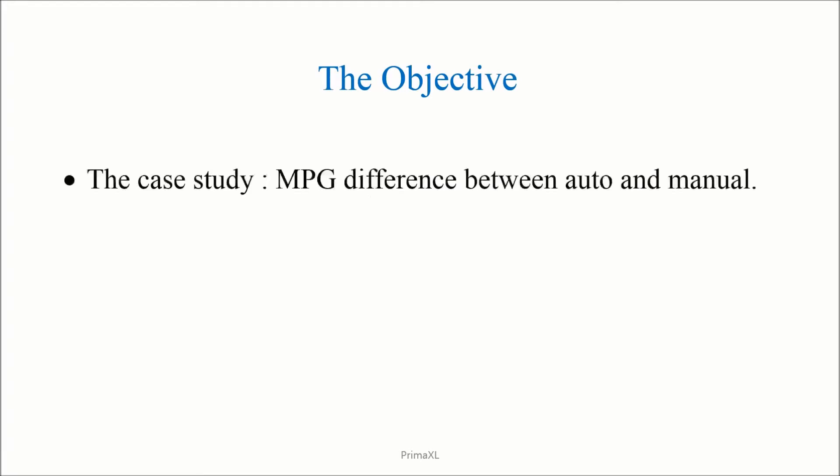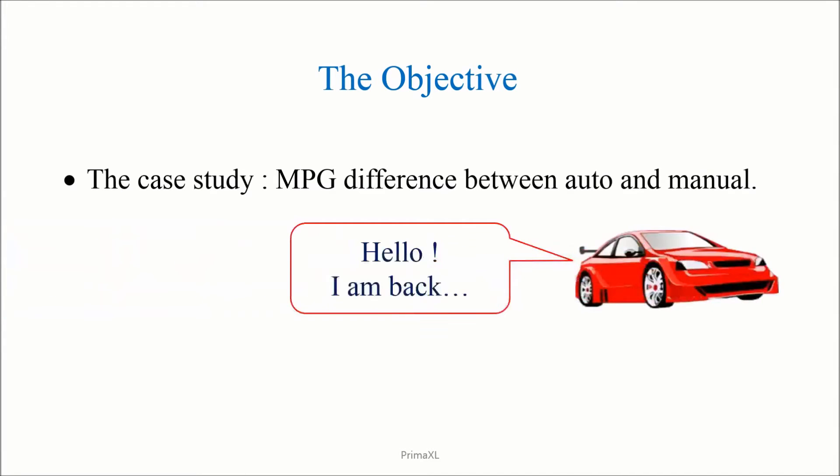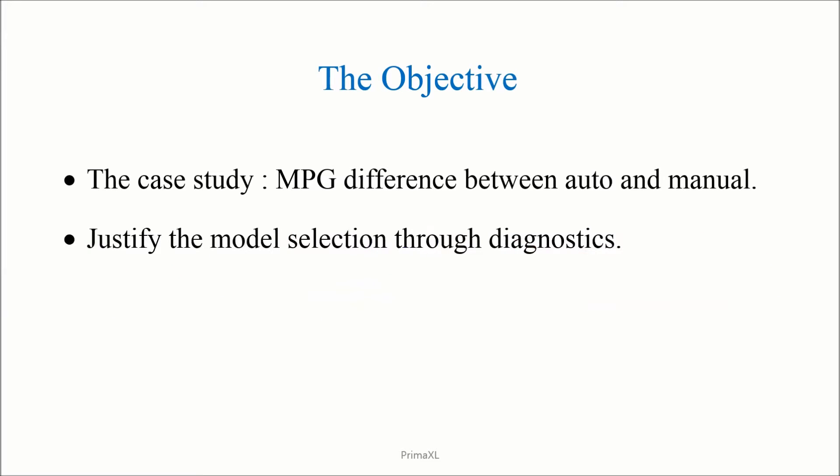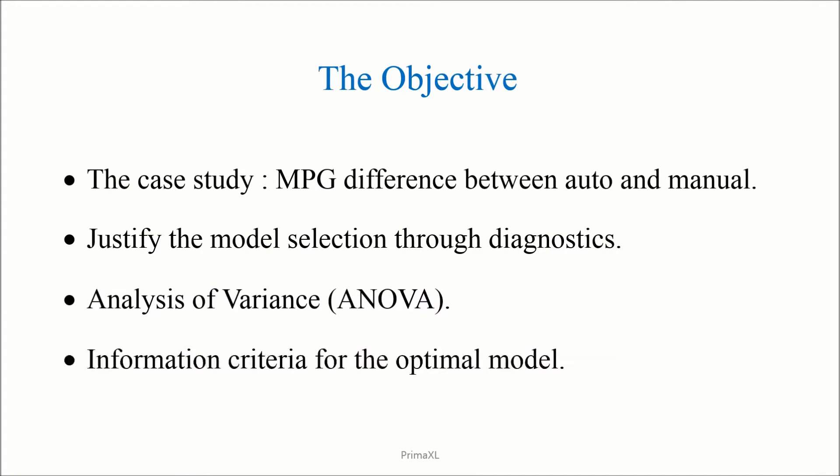Diagnostics. Today we'll continue with a study about the car's MPG difference between automatic and manual transmission. We'll justify the model selection with diagnostics and apply the analysis of variance as well as the so-called information criteria.